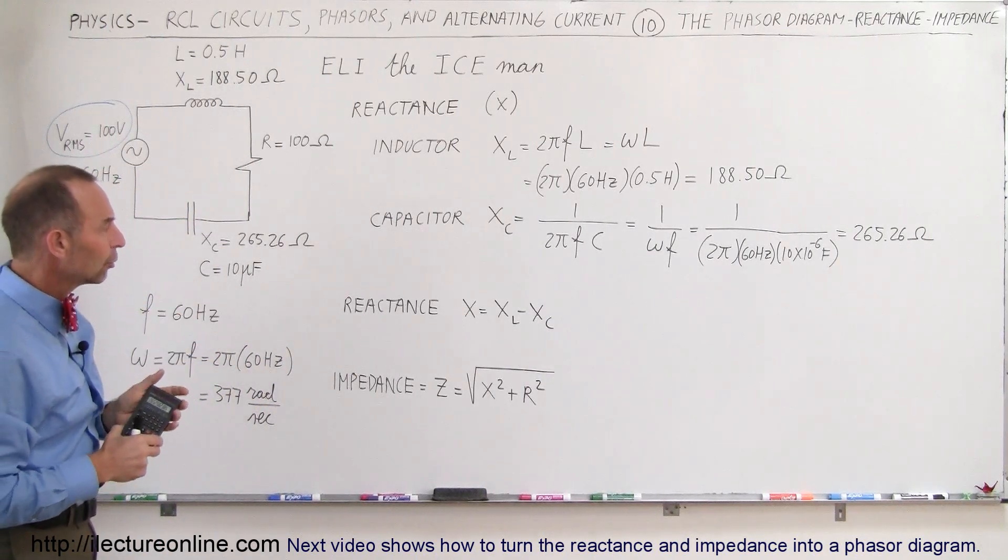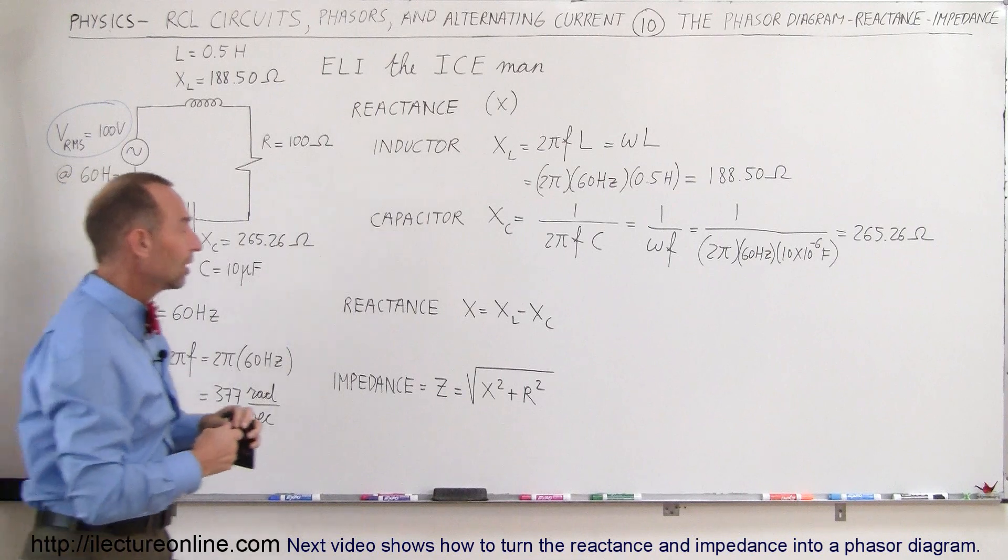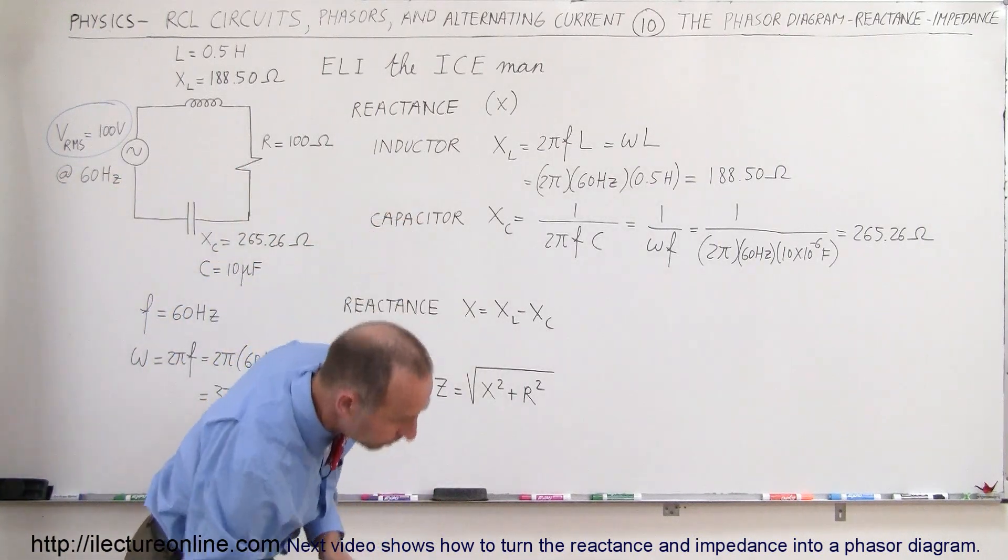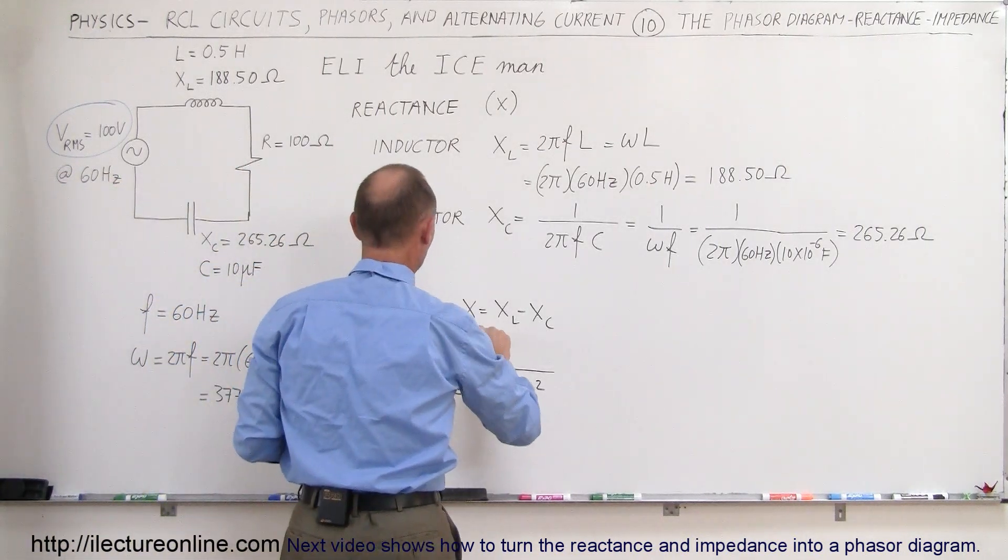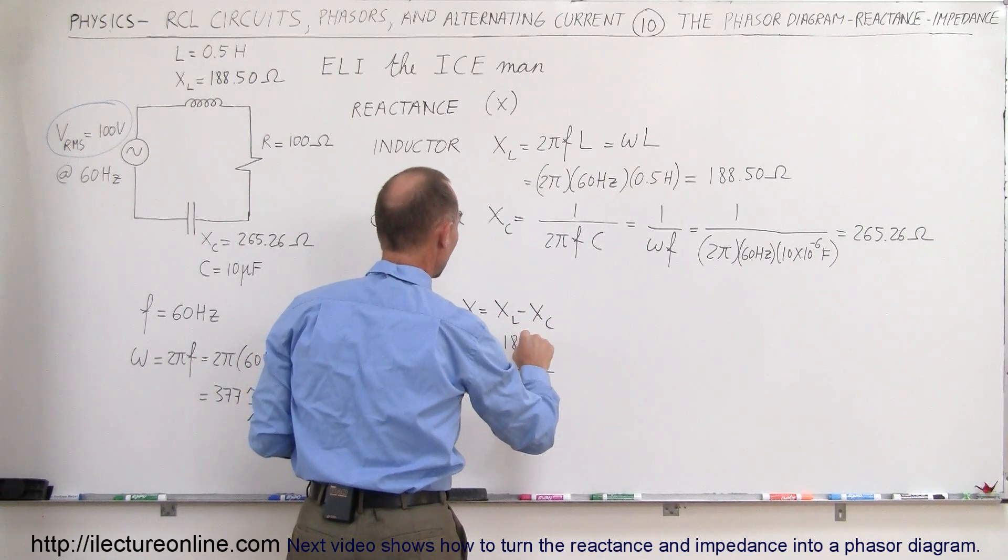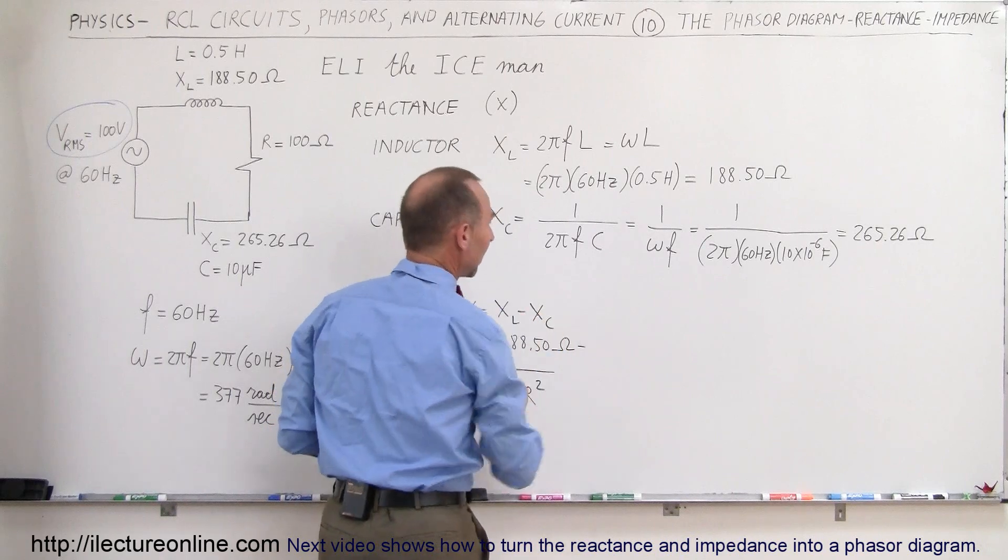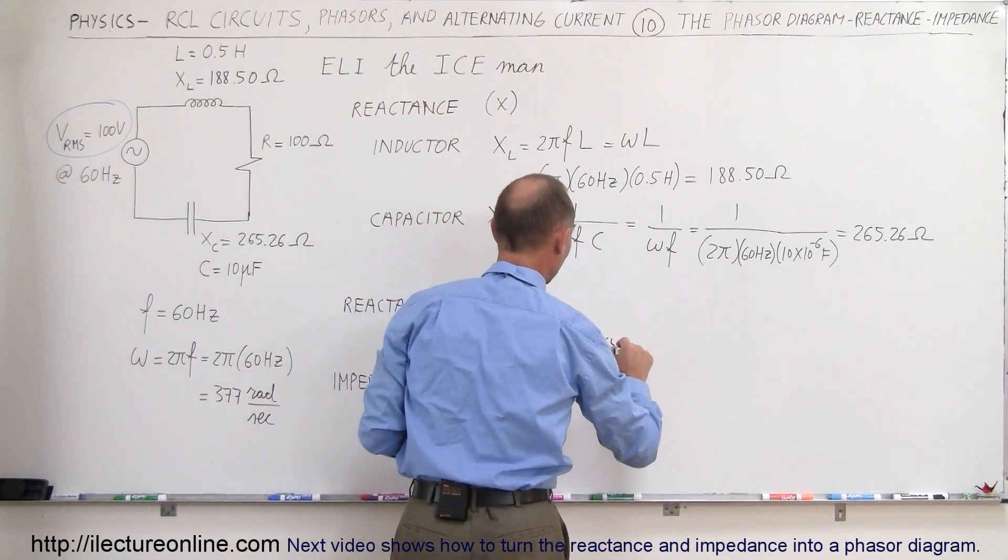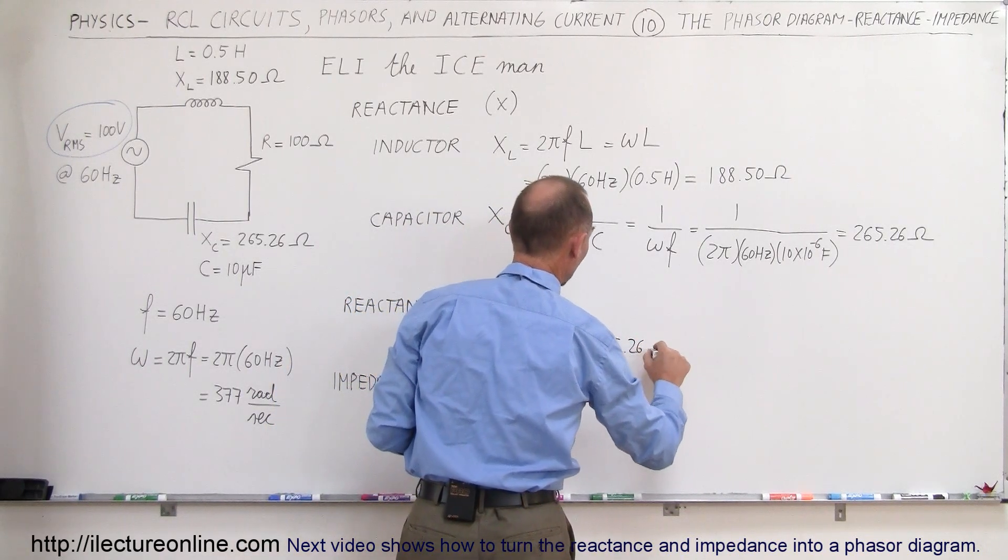All right, next what we're going to do is find the total reactance. And so in this case, the total reactance X will be equal to the inductive reactance of 188.50 ohms minus the capacitor reactance, which is 265.26 ohms.